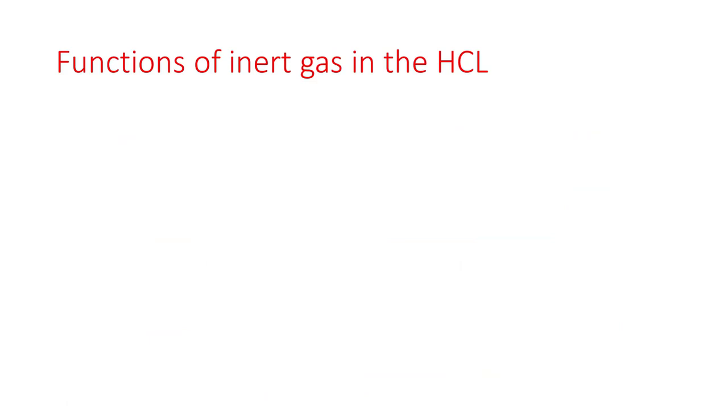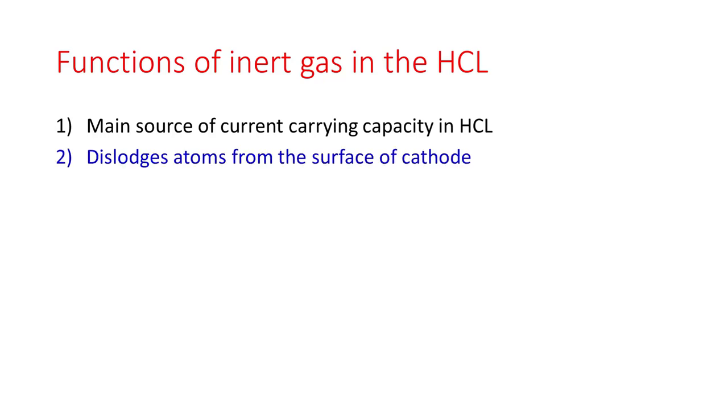What are the functions of inert gas in hollow cathode lamp? It is the main source of current carrying capacity. It dislodges atoms from the surface of cathode. It is primarily responsible for excitation of ground state metal atoms.